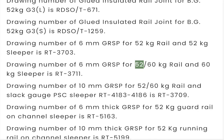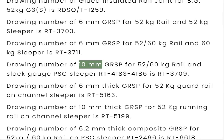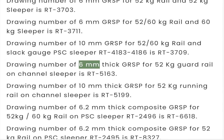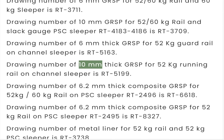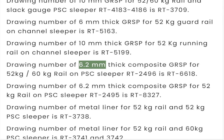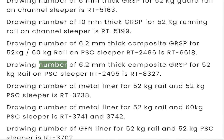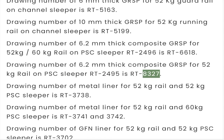Drawing number of 6 mm GRSP for 52 kg rail and 52 kg sleeper is RT3703. Drawing number of 6 mm GRSP for 52/60 kg rail and slack gauge PSC sleeper RT4183 to 4186 is RT3709. Drawing number of 6 mm thick GRSP for 52 kg guard rail on channel sleeper is RT5163. Drawing number of 10 mm thick GRSP for 52 kg running rail on channel sleeper is RT5199. Drawing number of 6.2 mm thick composite GRSP for 52/60 kg rail on PSC sleeper RT2496 is RT6618. Drawing number of 6.2 mm thick composite GRSP for 52 kg rail on PSC sleeper RT2495 is RT8327.